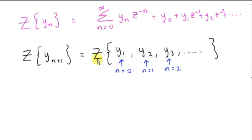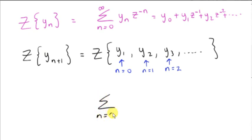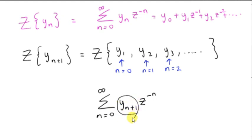Now let's get back to the z transform of our shifted sequence. Using the summation notation, we're summing from 0 to infinity of y sub n plus 1 times z to the power of minus n — we just stick our sequence in, multiply by z to the minus n, and sum.